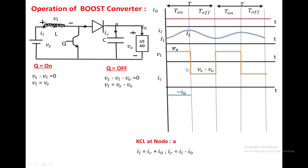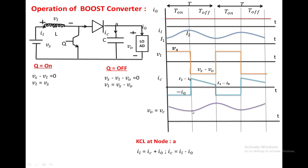At every interval during switch-off, we subtract I_0 from I_L to get the capacitor current waveform. At one instant the inductor current is I_2, and at another it is I_1, giving I_2 minus I_0 and I_1 minus I_0 respectively. When the switch is on, the capacitor supplies the constant load current, so a constant negative current passes through the capacitor, meaning the capacitor discharges. As the capacitor discharges, its voltage decreases, so the load voltage also decreases from maximum to minimum value.